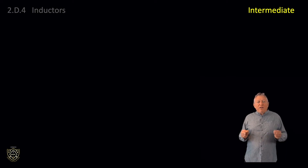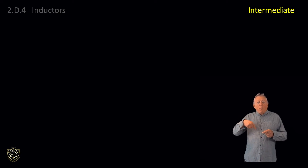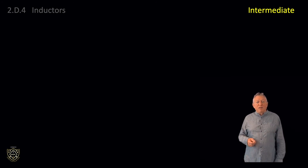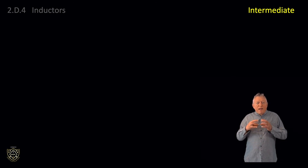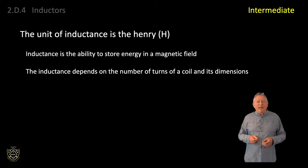Inductors are electronic components that utilise the magnetic field around a current-carrying wire to store energy. To optimise or concentrate this magnetic field, inductors are normally wound helically. Often the wire is wound around a former which further concentrates the field, increasing the inductance. In general, inductance is achieved with more turns, tighter windings and larger diameter turns. The unit of inductance is the Henry, unit abbreviation capital H, and inductance is the ability to store energy in a magnetic field.